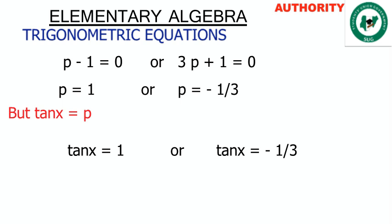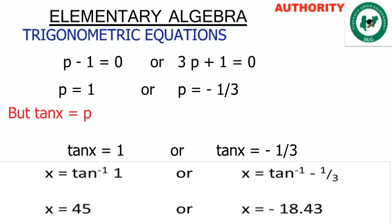Since we want x, not tanx, we apply the inverse: x = tan⁻¹(1) or x = tan⁻¹(−1/3). This gives x = 45° or x = −18.43°. So the solution to 3sec²x minus 2tanx plus 4 = 0 is x = 45° or x = −18.43°.